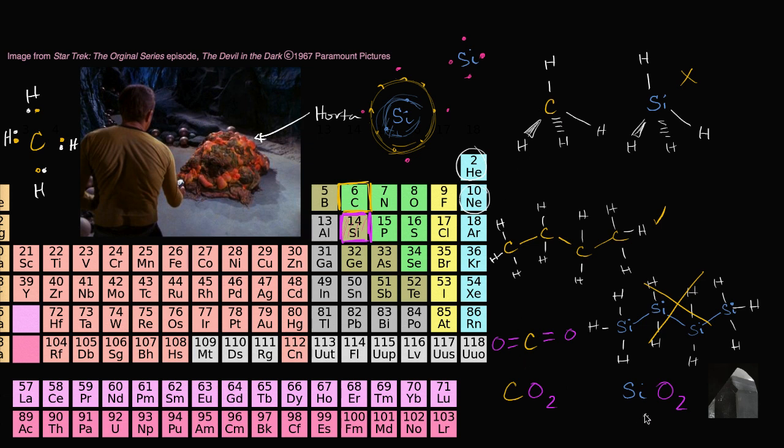And you might think, well, what about silicon oxide? And silicon oxide is actually a fairly common molecule, fairly common compound, but it does not exist in a gaseous state at the temperatures that we normally associate with life. Most of silicon oxide is in the form of quartz in the ground. So that is quartz over there.